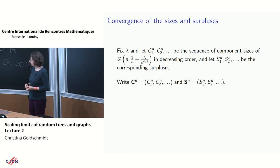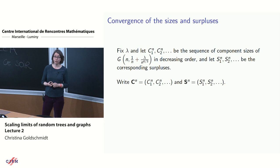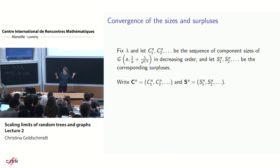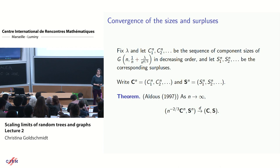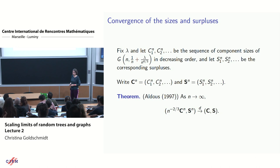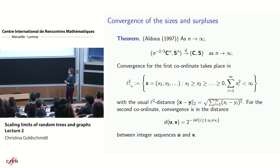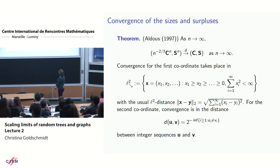Fix λ, and let C_1 ≥ C_2 ≥ ··· be the component sizes in decreasing order, and S_1, S_2, ... the corresponding surpluses. Collect these into vectors C^n and S^n. The theorem of Aldous (1997) says that as n → ∞, if we rescale component sizes by n^{−2/3} and leave surpluses unchanged, this pair converges in distribution to some limiting pair of sequences.